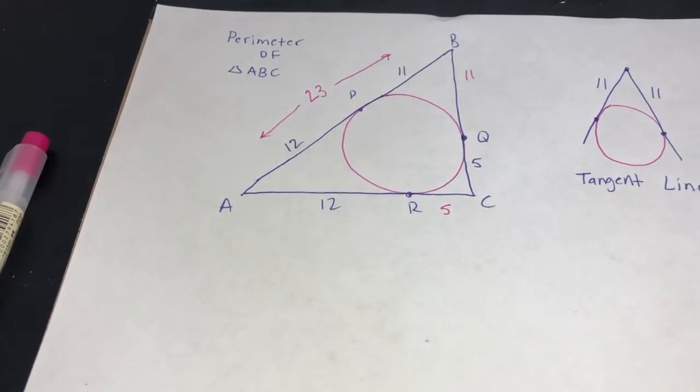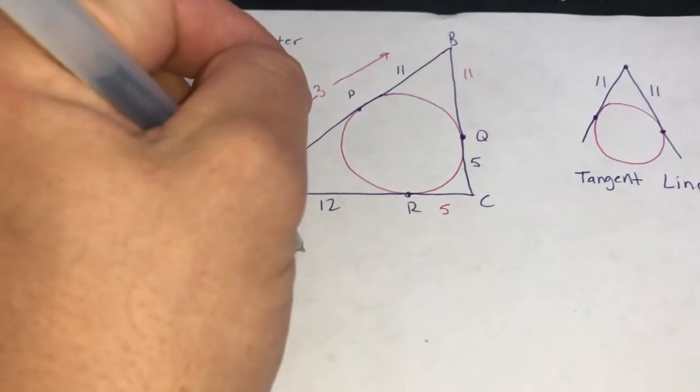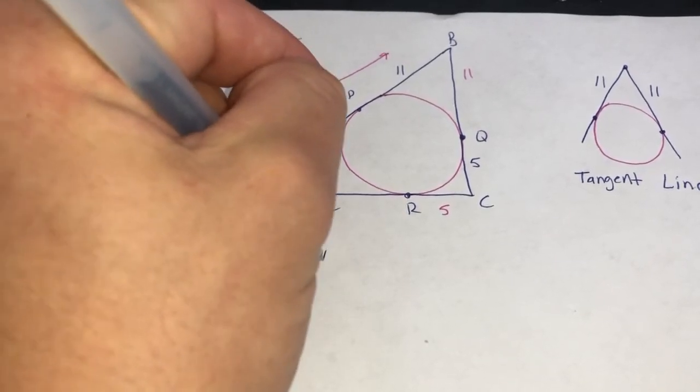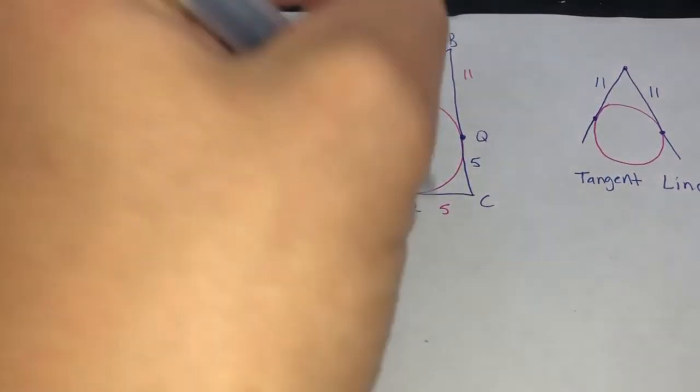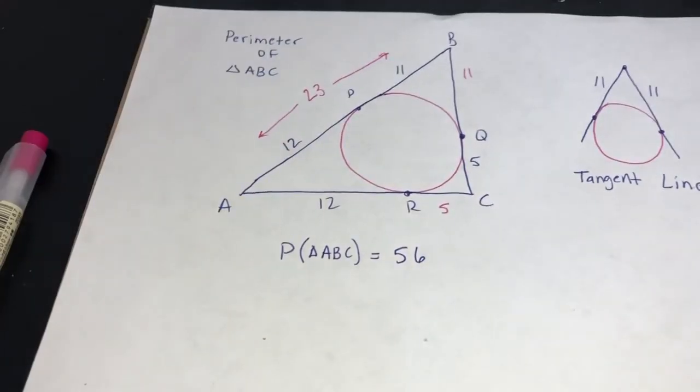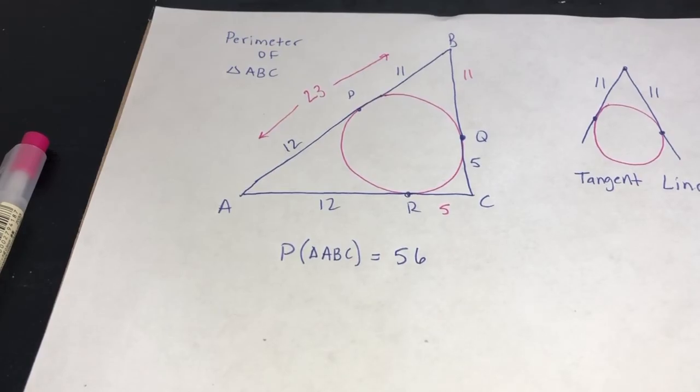12 plus 12 plus 5 plus 5 plus 11 plus 11. Perimeter of triangle ABC equals 56. Alright, hope it helps.